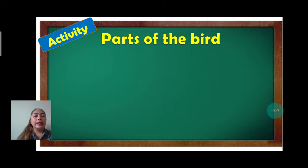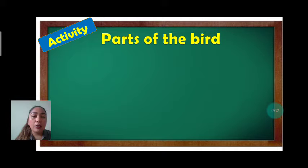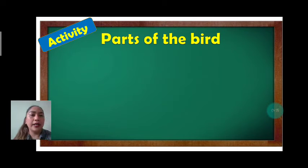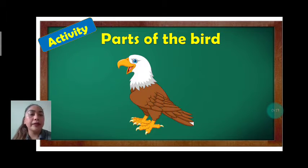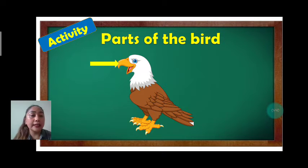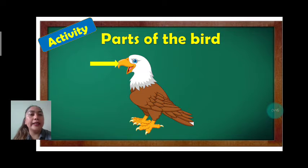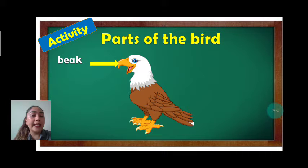Now let's have an activity. You are going to label or say the parts of the bird. What are those? First, what part of the bird? Everybody, beak. Again, beak. Let's spell: B-E-A-K. Beak. Very good.